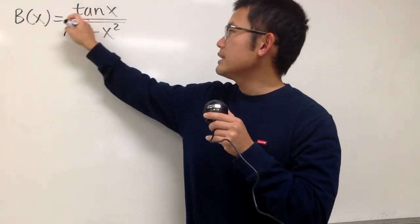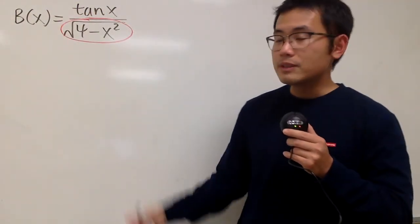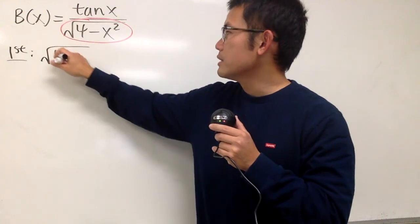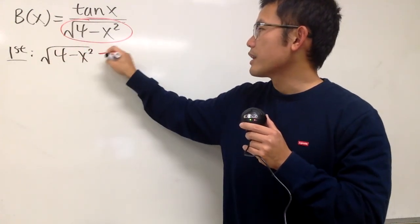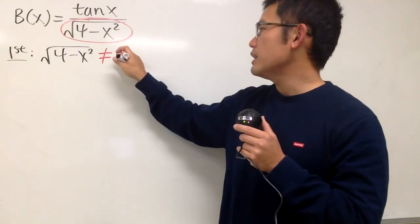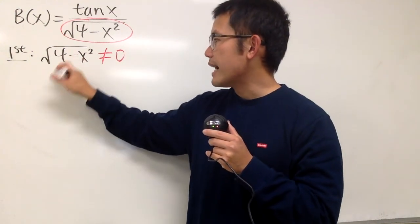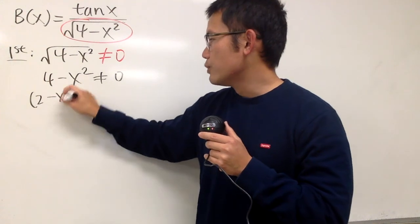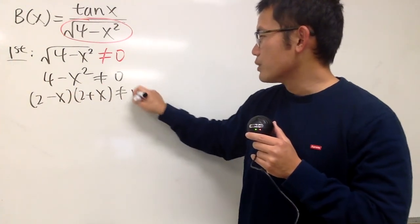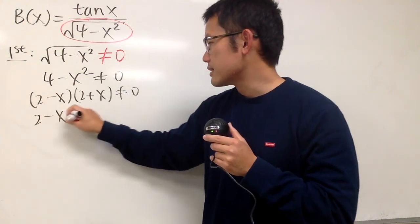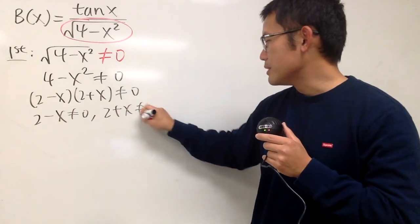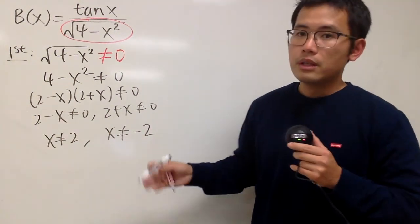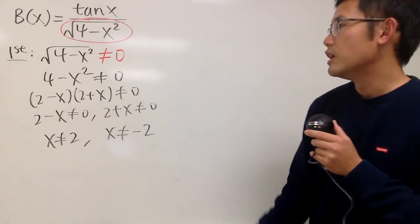First thing first, we notice that we have a denominator — a square root on the bottom. Whenever we have a denominator, we have to make sure the bottom cannot be equal to 0. So this right here cannot be equal to 0. Squaring both sides, we just focus on the inside: 4 minus x squared cannot equal 0. Factoring: (2 minus x)(2 plus x) cannot equal 0. So x cannot be 2, and x cannot be negative 2. We have two numbers we cannot use.